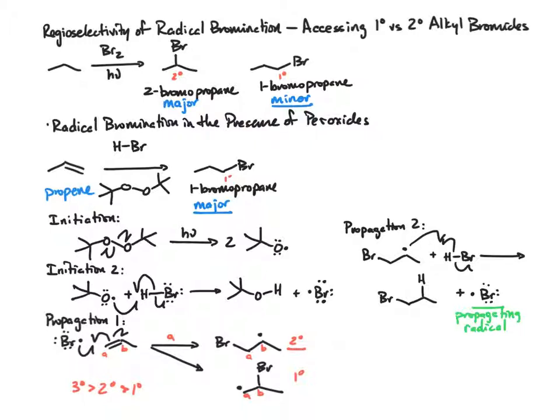Thus cycling through the free radical chain reaction. In this mechanism, when we have the presence of a peroxide and hydrogen bromide, we end up with the least substituted alkyl bromide. In this specific example with propene, it's 1-bromopropane.